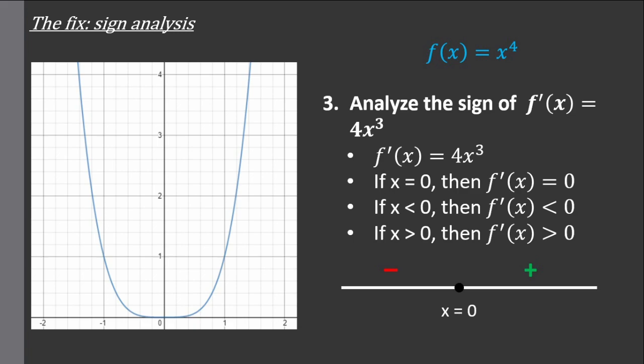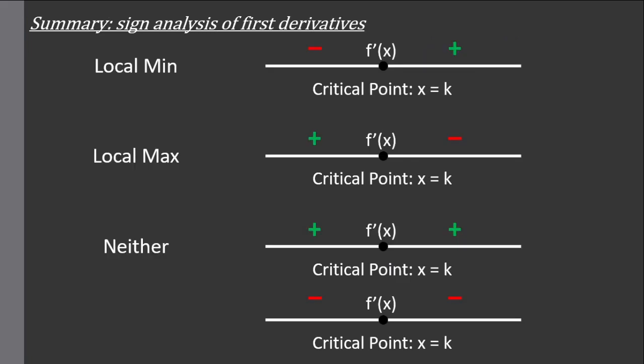Let's summarize sign analysis. Find the critical points and see how the first derivative behaves around the critical point. If to the left it is negative and to the right it is positive, that means it goes down then up — so this is a local min. If the left is positive and the right is negative, that means it goes up then down — this is a local max. And if it's the same sign on both sides, then you know it is neither. That is the end of sign analysis.